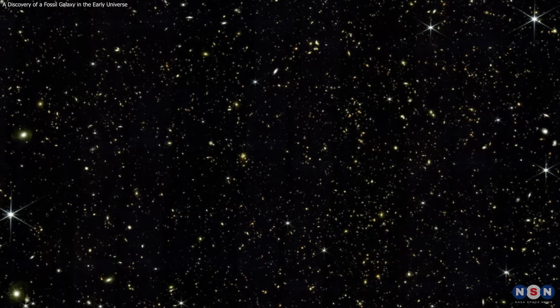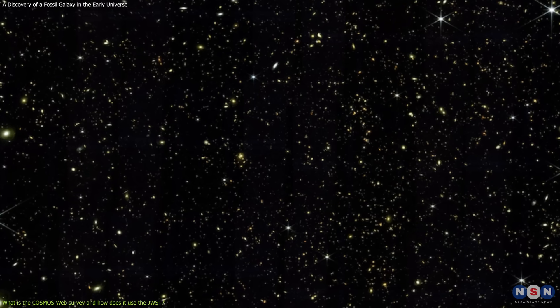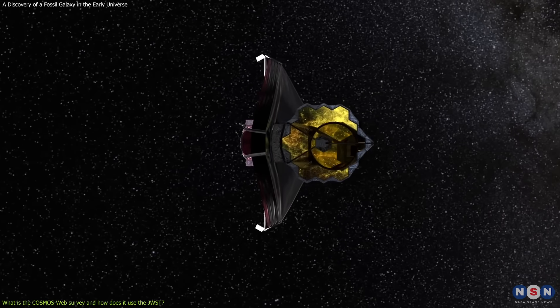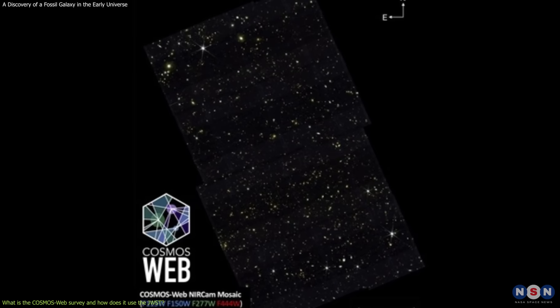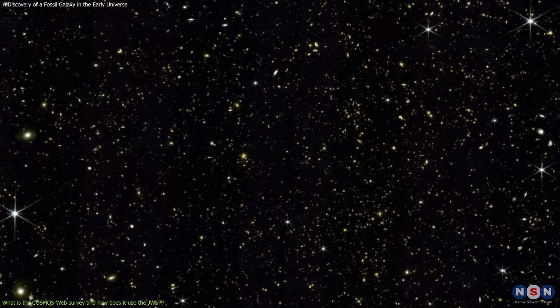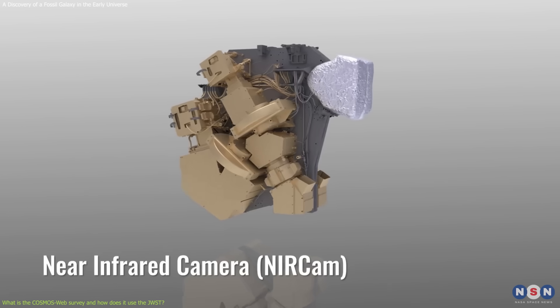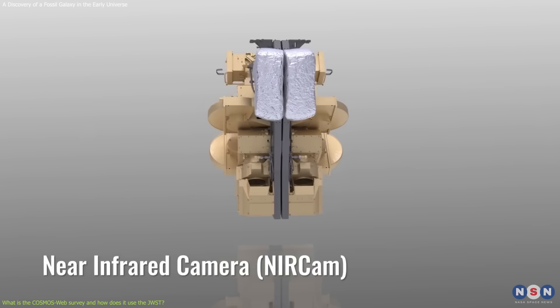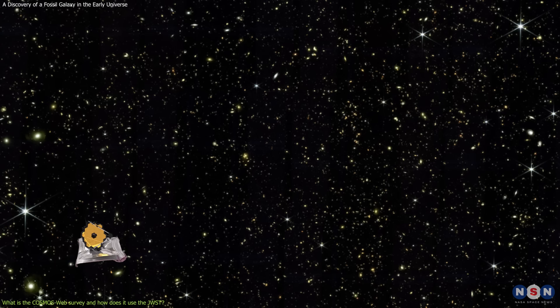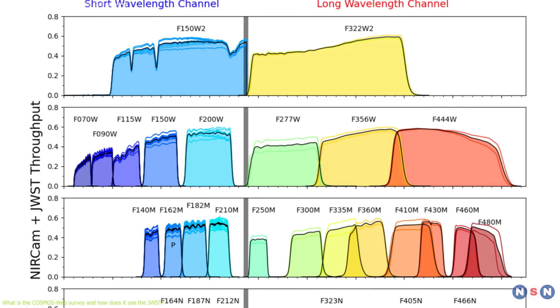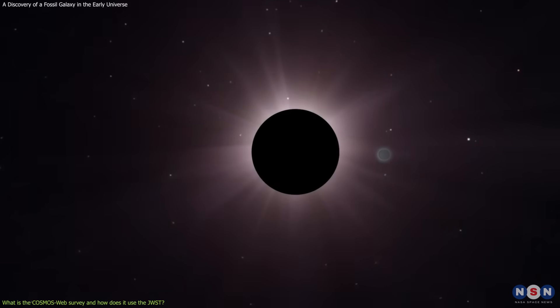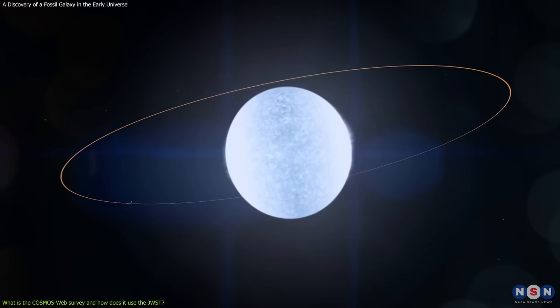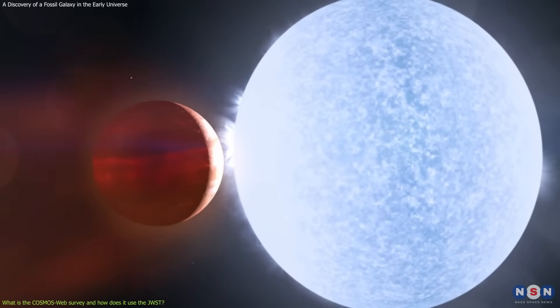The Cosmos Webb Survey is a project that aims to study up to one million galaxies using the James Webb Space Telescope and its four scientific instruments, which can observe the infrared light from the universe with unprecedented resolution and sensitivity. One of these instruments is the near-infrared camera, which is the main camera that can take images of the sky in nine different wavelength bands, ranging from 0.6 to 5 microns. It can also perform coronagraphy, which is a technique that blocks the light from bright sources, such as stars, to reveal fainter objects, such as planets, around them.